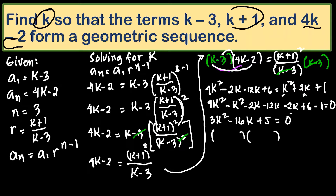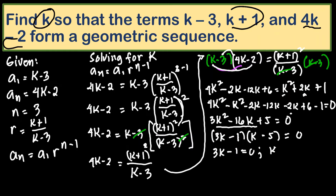Factoring 3k² - 16k + 5 = 0 gives (3k - 1)(k - 5) = 0. Solving each factor: 3k - 1 = 0 gives k = 1/3, and k - 5 = 0 gives k = 5. So there are two geometric sequences corresponding to these two values of k.